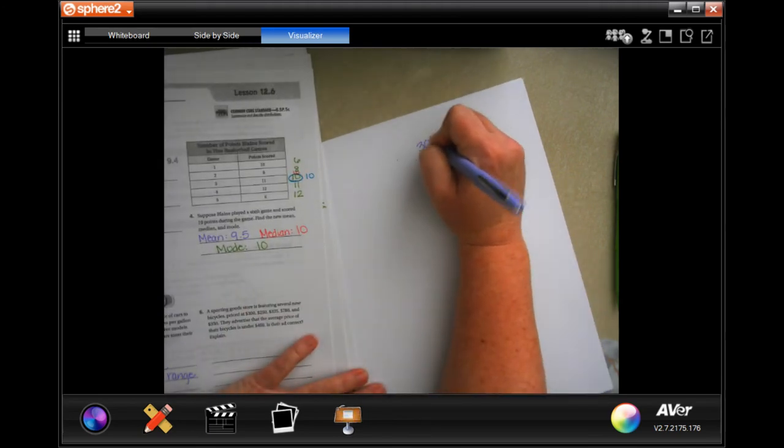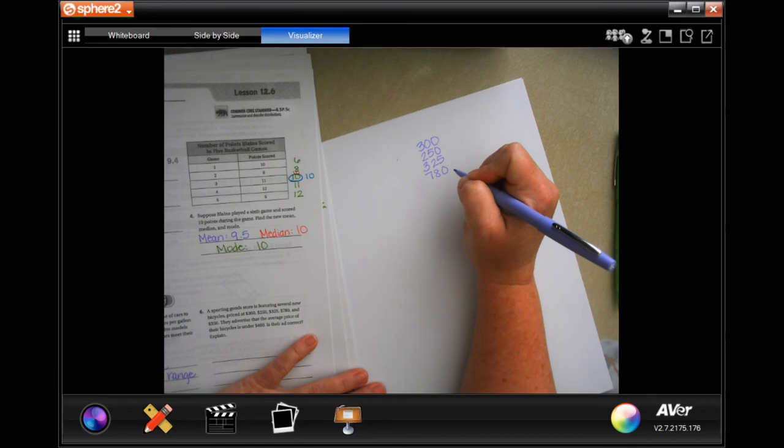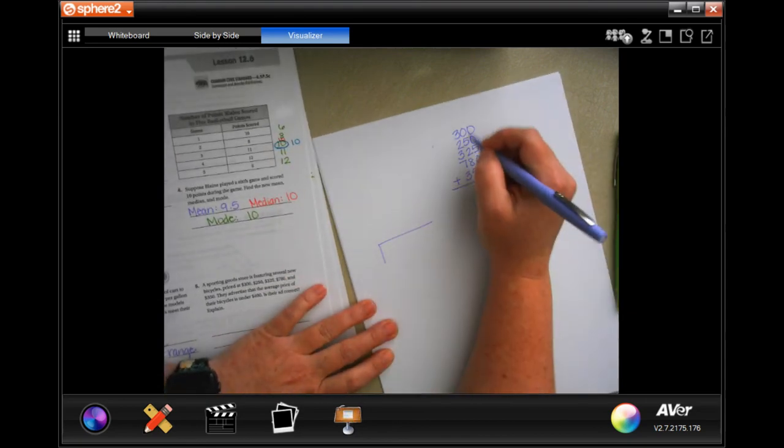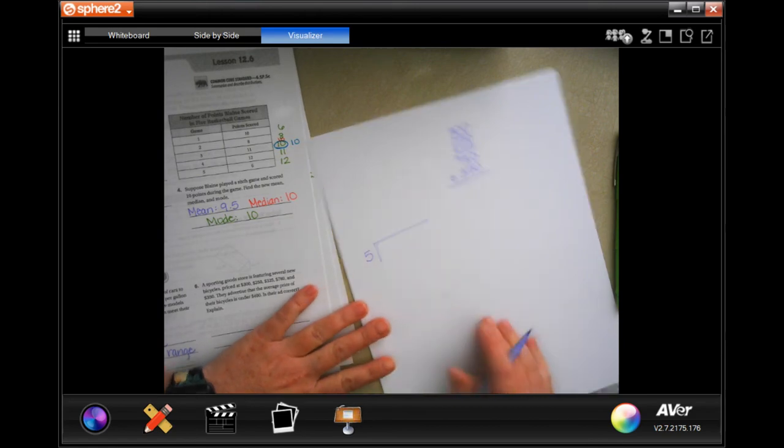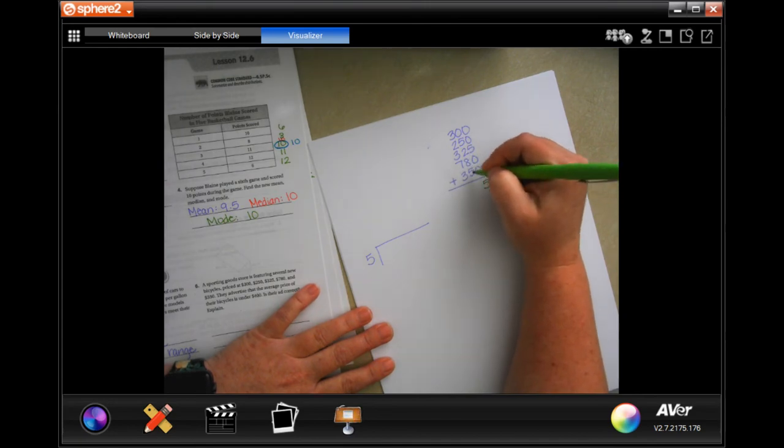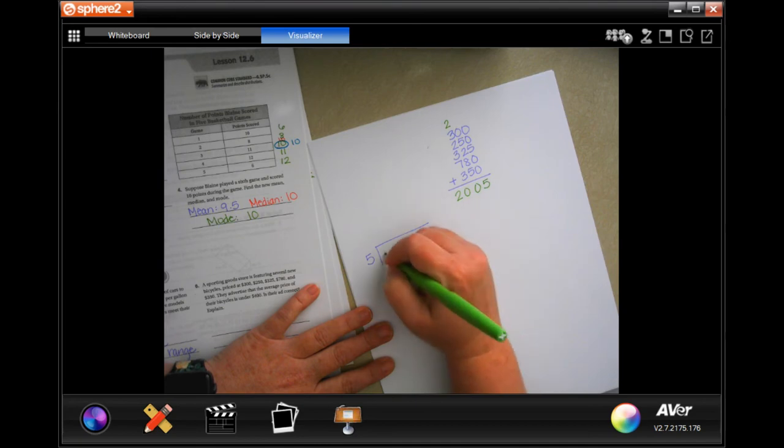So, $300, $250, $325, $780, and $350. We're going to add those up and then we are going to divide by 1, 2, 3, 4, 5. So, 5, 7, 15, 20, carry 2, 2, 5, 7, 10, 17, 20.